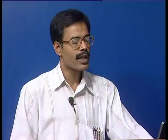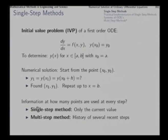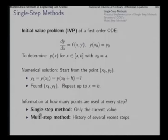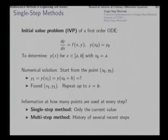Before proceeding with that analysis, let us have a quick look at the two kinds of methods we can use. One is a single-step method, in which only the current value — only the current (x₀, y₀) and the corresponding f — is used at every iteration. And there is another family of methods called multi-step methods, in which the history of several recent steps is used. Most of our discussion here will be limited to single-step methods.